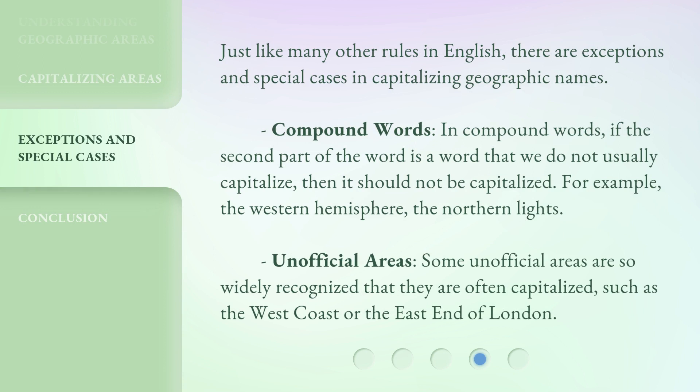Just like many other rules in English, there are exceptions and special cases in capitalizing geographic names. Compound words: in compound words, if the second part of the word is a word that we do not usually capitalize, then it should not be capitalized — for example, the Western Hemisphere, the Northern Lights. Unofficial areas: some unofficial areas are so widely recognized that they are often capitalized, such as the West Coast or the East End of London.